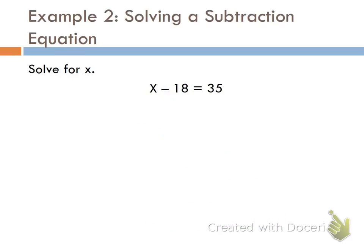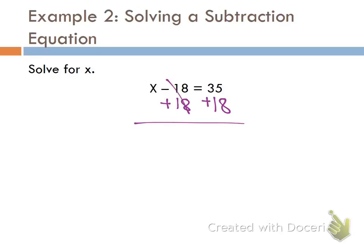Example two: the operation connected to the variable is subtraction. The inverse of subtraction is addition, so to get rid of negative 18, I add 18. My rule says whatever I do to one side, I do the same to the other. I show that my 18s cancel, and all I have left is x equals — what's 35 plus 18? Very good.